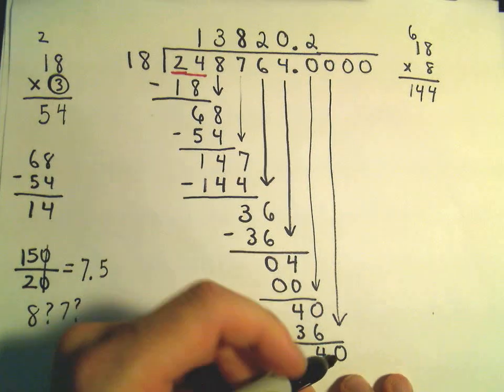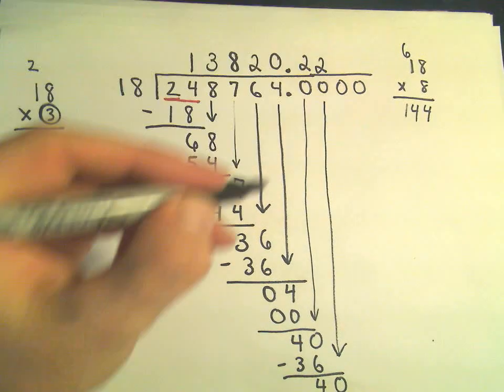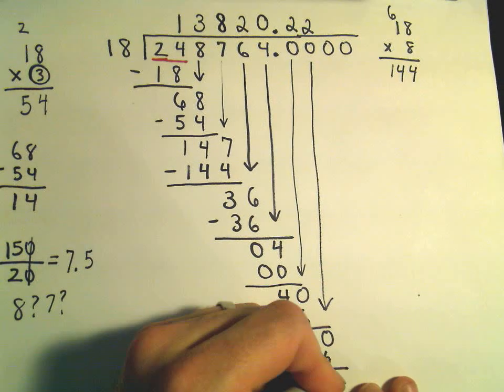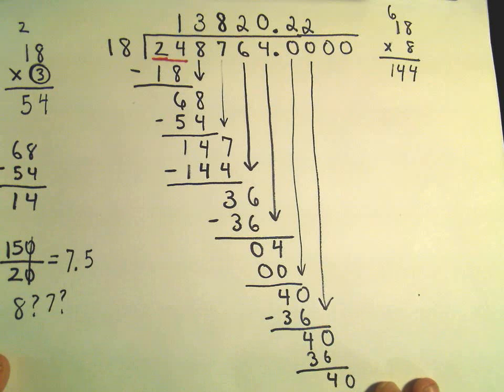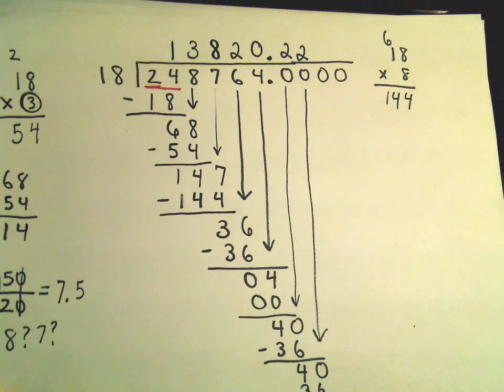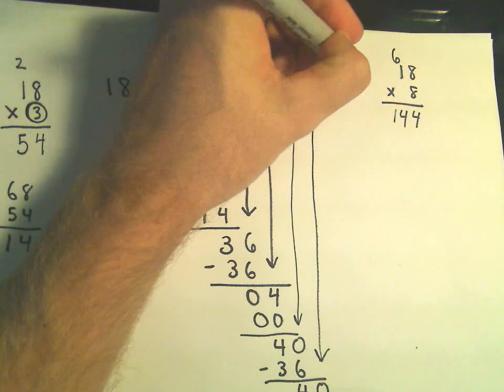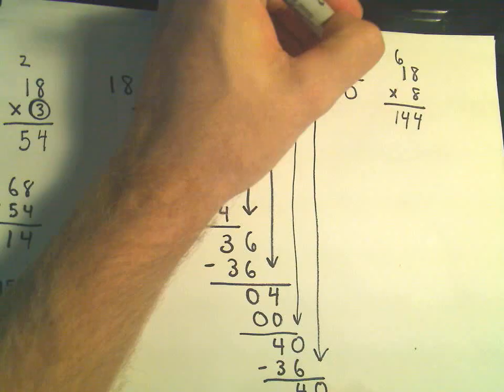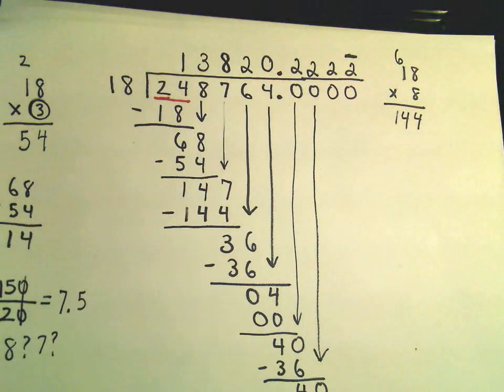Because again, 18 will go into 40 two times. If we subtract away our 36, again, we're going to get another 4. And then we'll drop down our next 0. We're going to keep getting a 4 and 0 every time. So to me, it looks like the 2s should just keep going on forever and ever and ever. And to indicate that, we can put a little bar over one of the 2s.